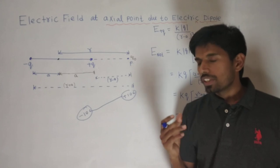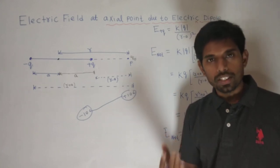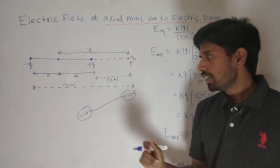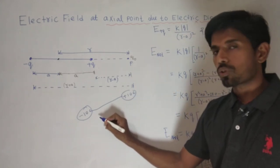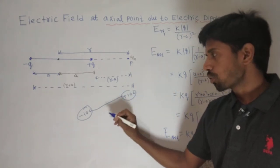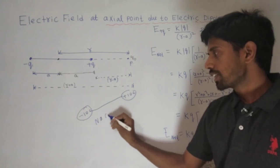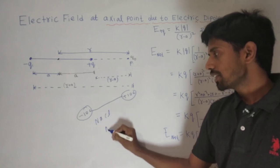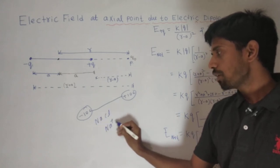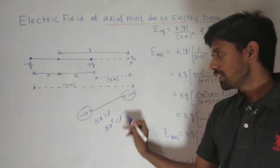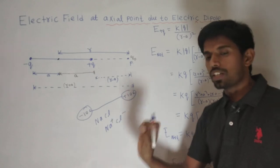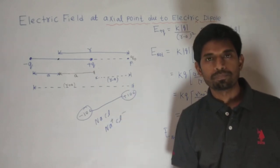Some dipoles are natural and some we create artificially. For example, natural electrolytic solutions like NaCl — what is NaCl? It is Na+ and Cl−. This is a natural dipole.